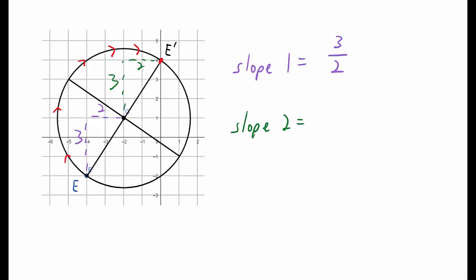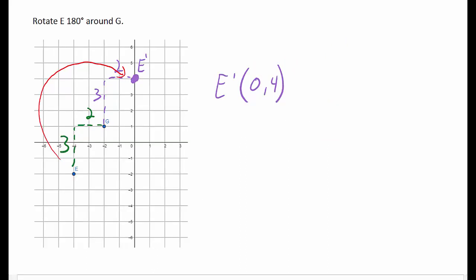No matter where you check the slope on a line, it will always be the same. So the slope from G to E prime will also be 3 over 2. So when we rotate point E 180 degrees around G, we end up at the point 0, 4.